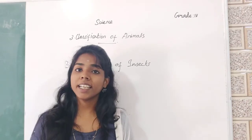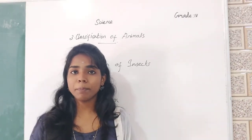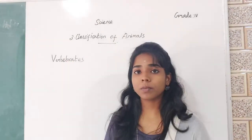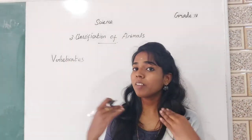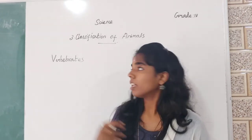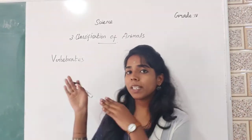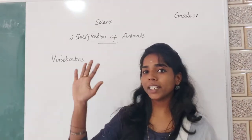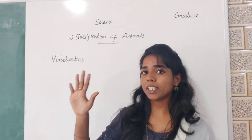Next, we learnt about the second type: vertebrates. What is meant by vertebrates? Animals that have a backbone are called vertebrates. These vertebrates are grouped into five types.